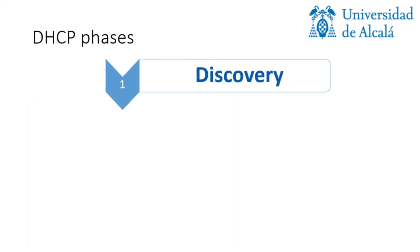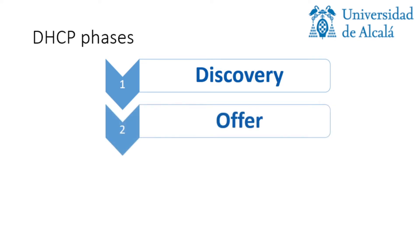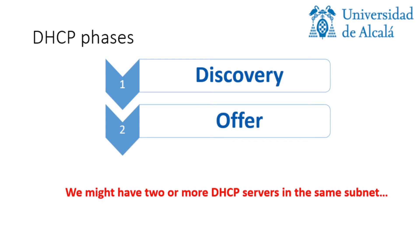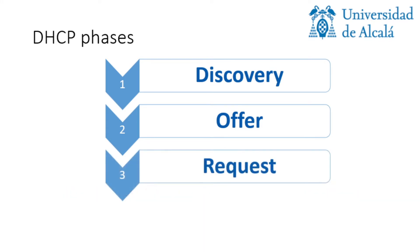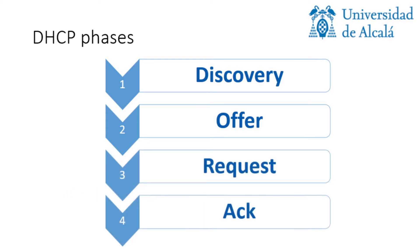DHCP is divided into four main phases. The first one is to discover the servers in the subnet. The second is to obtain offers from the available servers, because there could be more than one. The third is to request an IP. And the last one is to acknowledge the request and finalize the assignment. Let's see these phases in detail.